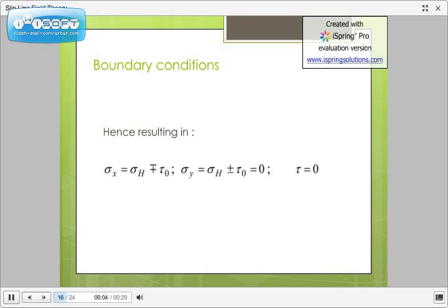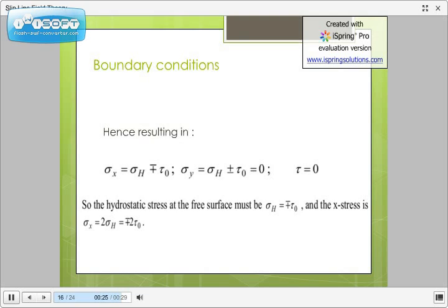Now, we put phi equals plus minus 45 degrees in the equations to get the following results as sigma x equals minus p plus minus tau naught, sigma y equals minus p plus minus tau naught equals zero and tau equals zero. Now, since sigma y equals zero, hence, hydrostatic stress at free surface must be plus minus tau naught and sigma x equals 2 sigma h equals plus minus 2 tau naught.